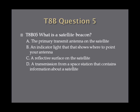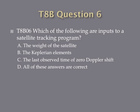Question 5: What is a satellite beacon? A. The primary transmitted antenna on the satellite? B. An indicator light that shows where to point your antenna? C. A reflective surface on the satellite? Or D. A transmission from a space station that contains information about a satellite? Question 6: Which of the following are inputs to a satellite tracking program? A. The weight of the satellite? B. The Keplerian elements? C. The last observed time of zero Doppler shift? Or D. All of these answers are correct.